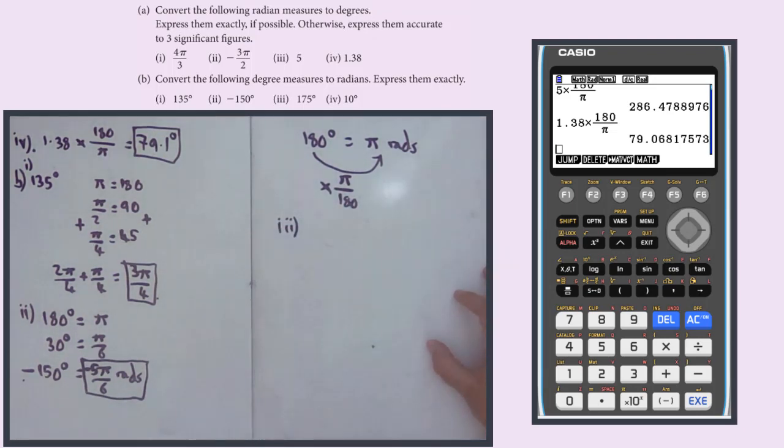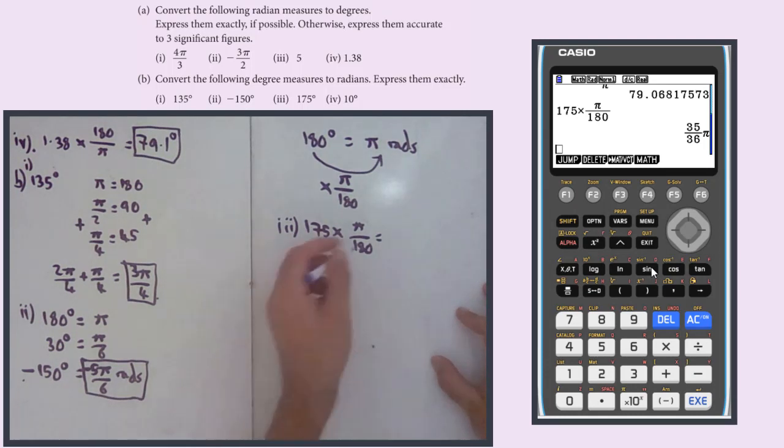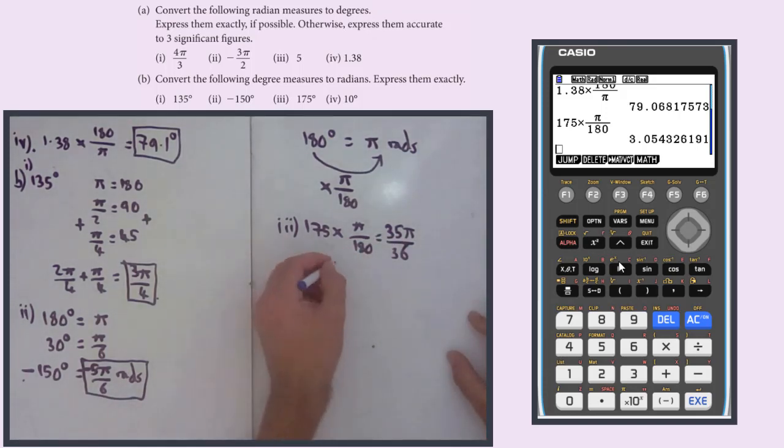So for part 3, the angle is 175 degrees. So we need 175 times π over 180. And that gives us, so it does give us a nice number, which we could use. So I'm going to write that down. 35π over 36. Or to 3 significant figures, we just go and convert here. 3.05. 3.05 radians.